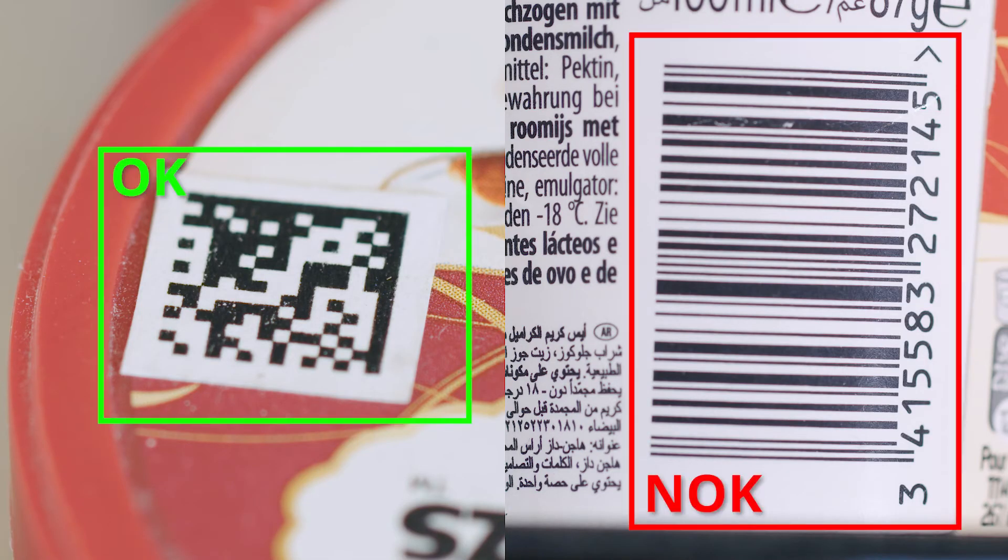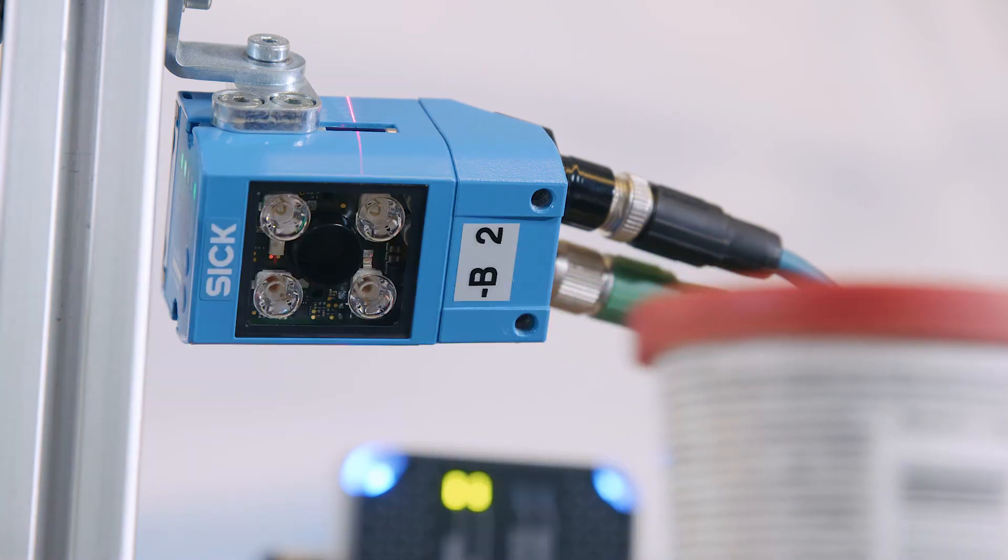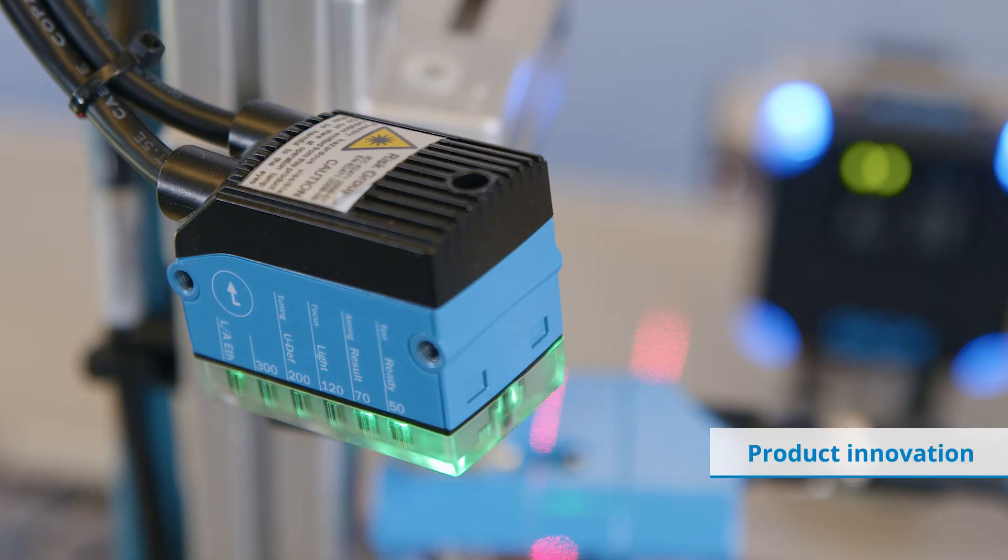If the codes do not match, the product is separated out. By identifying the object via codes, you also know what the last processing step for the product was.